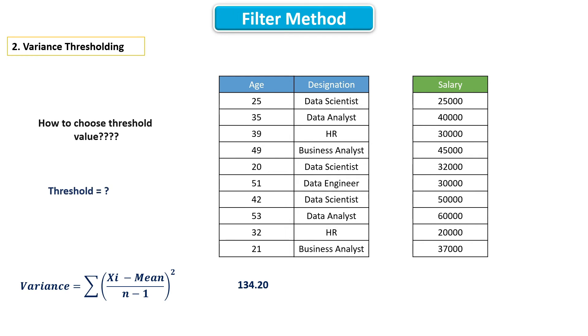But how to choose threshold value? It's a hyperparameter. You have to try different threshold values and pick the one which works well for your dataset.